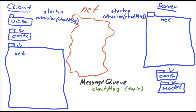Actually there's something missing in this image, and that is the message queue client. The message queue client is a product provided by the message queue vendor that handles the actual communication between a node using the message queue and the message queue itself. One can say it's like a driver for the message queue, and it must reside on all nodes that communicate with the message queue — that is the server and all clients in the chat program.